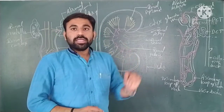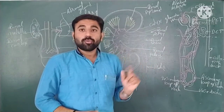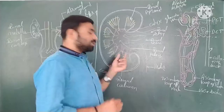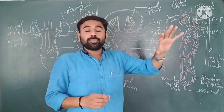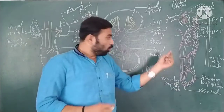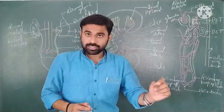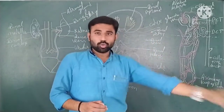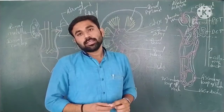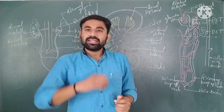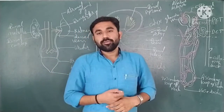The first type is the cortical nephron. In cortical nephrons, the Bowman's capsule, PCT, and DCT are all present in the cortex region, but the loop of Henle is very short and does not extend very deep into the medulla.